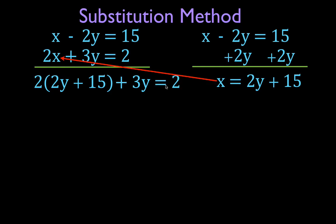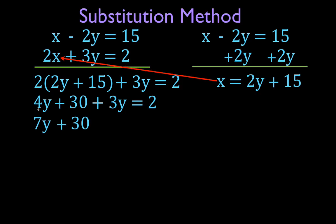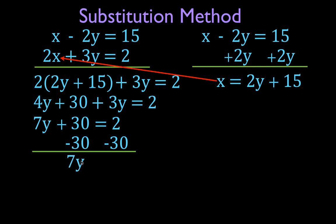Now we can go ahead and simplify this equation and solve for y. 2 times 2y is 4y. 2 times 15 — we're going to distribute the 2 through this — is 30. And then we have 3y equals 2. We're going to combine our like terms. We have 4y and 3y; that's 7y plus 30 equals 2. We want to move that 30 to the other side, so we're going to add minus 30 to both sides. That gives us 7y equals 2 plus minus 30, which equals minus 28. Divide both sides by 7, and you get y equals minus 4.